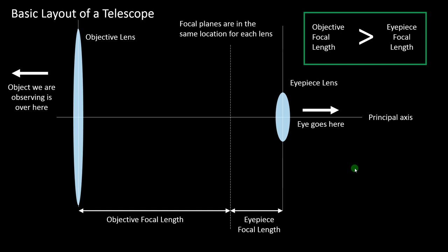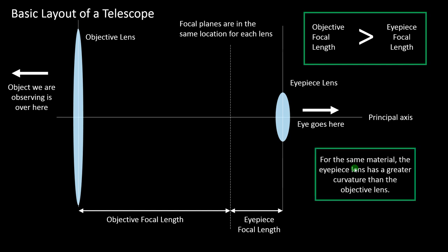That goes into what the magnification of the telescope is, as we'll see later. Assuming the lenses are made of the same material, thinking back to the lens video, we'd expect the objective lens to have a long focal length because it has less curvature, and the eyepiece lens to have a short focal length because it has more curvature.